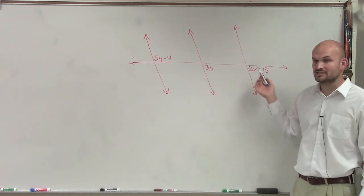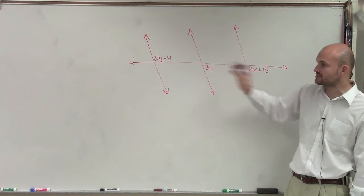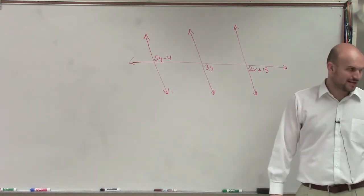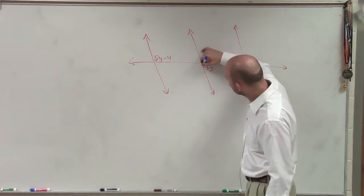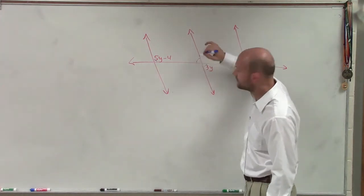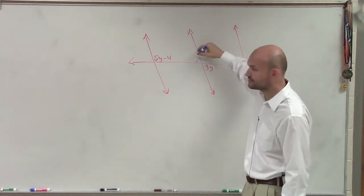So we can see that these are consecutive interior angle, or I'm sorry, corresponding angles. They equal each other, but one's an x and one's a y. That's not going to help me out so much, right? One thing I also notice is, if this angle is 3y, then what does that angle have to be, Jared? Do you know? If that's 3y, do you know what that has to be?